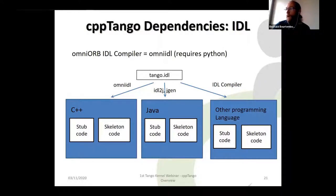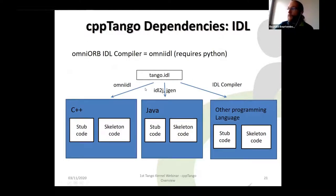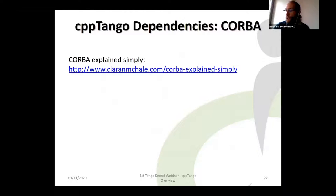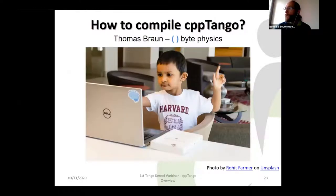One important thing: in omniORB the IDL compiler is omniidl and it requires Python as well, so that is another dependency. You can get more details about CORBA by following the 'CORBA explained simply' link — it's pretty well done and really helps.